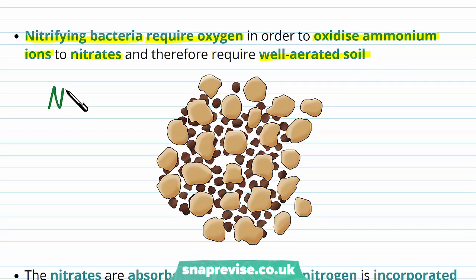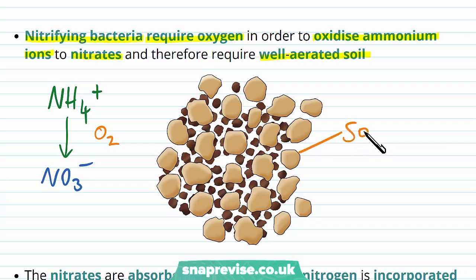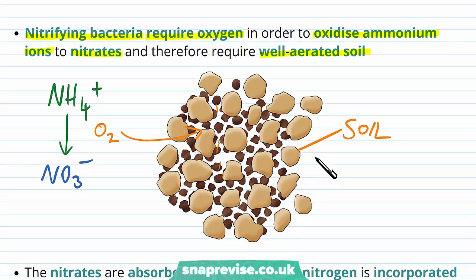In the process of turning the ammonium, NH4, eventually into nitrate, NO3-, to do this and release energy they need oxygen in the process. So the soil that they live in has to have spaces between the particles for air and oxygen to be able to access those bacteria.